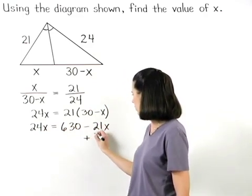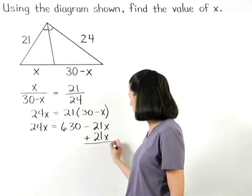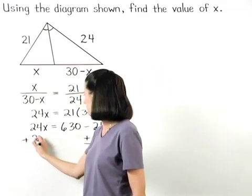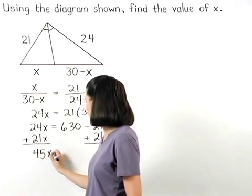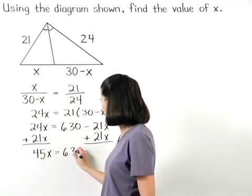Adding 21x to both sides gives us 45x equals 630.